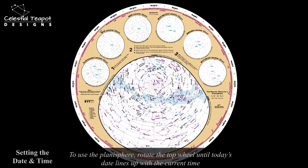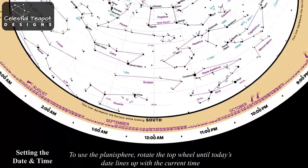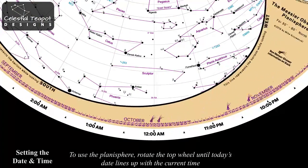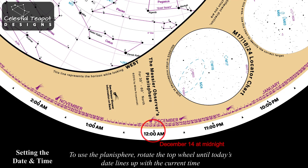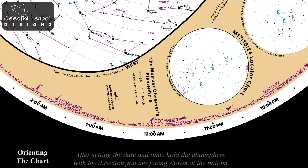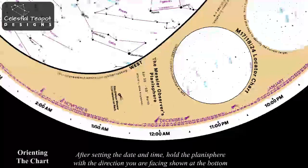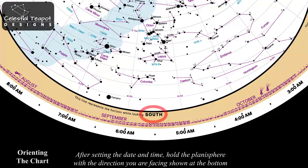To use the planisphere, rotate the top wheel until today's date lines up with the current time. This example shows December 14th at midnight. After setting the date and time, hold the planisphere with the direction you are facing shown at the bottom. In this example we are looking south.